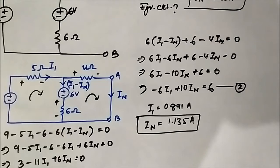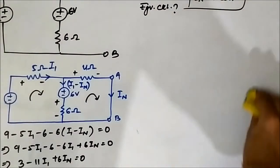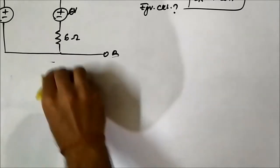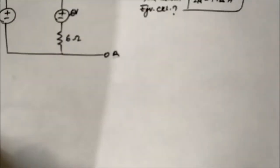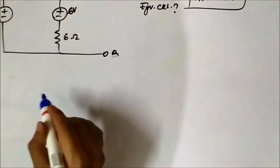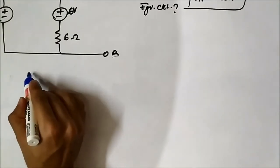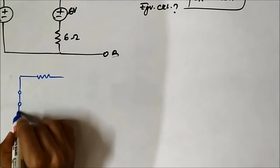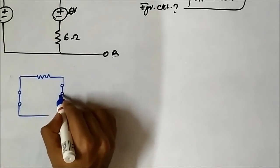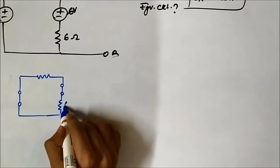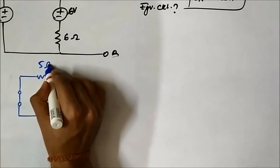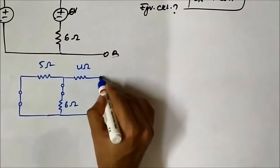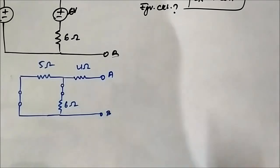Now we have to find the Rn or the equivalent resistance which is the same for both Norton and Thevenin. Rn is calculated by deactivating the independent sources. Here we have two independent voltage sources, so they will be short-circuited. This is short-circuited, again short-circuited. 6 ohm, 5 ohm and 4 ohm.